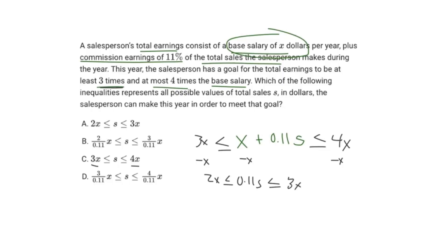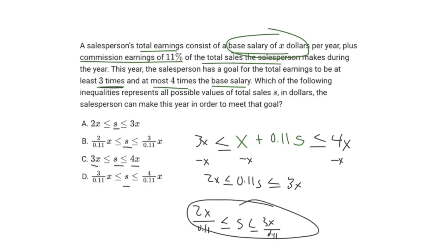So 2X is less than or equal to 0.11S, which is less than or equal to 3X. Now we want to isolate for S because in all these answer choices, S is by itself in the middle as the total sales. Therefore, we can just divide all sides by 0.11. We get 2X over 0.11 is less than or equal to S, less than or equal to 3X over 0.11. We can see that this lines up directly with answer choice B, and therefore that is our answer.